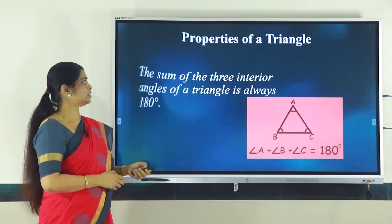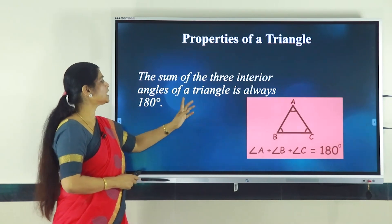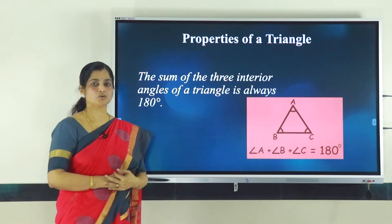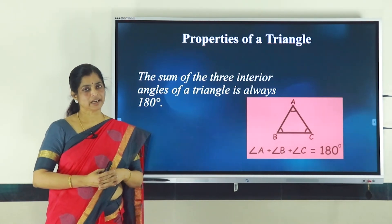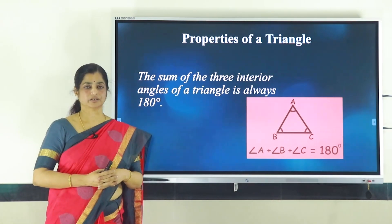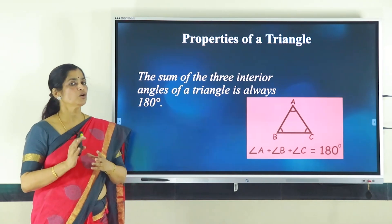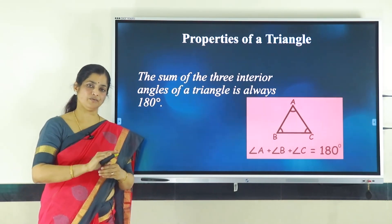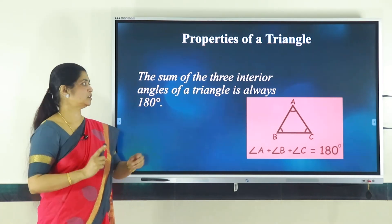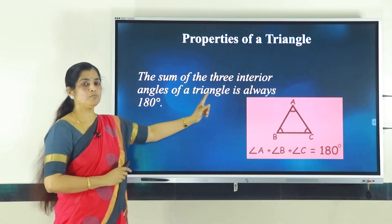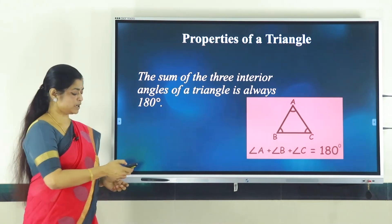The first property we are going to study is: the sum of the 3 interior angles of a triangle is always 180 degrees. A triangle has 3 angles, and when you add all 3, the sum should be exactly equal to 180 — not more, not less.